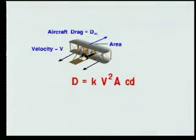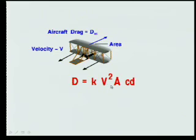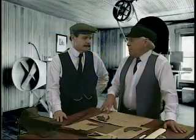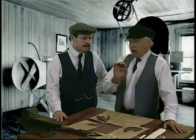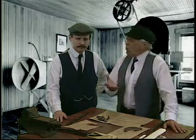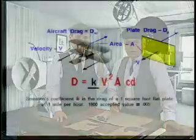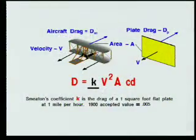The information included this equation, which shows that the drag, D, is equal to a pressure factor, K, times the velocity, V, that's squared, times A, the area, times a factor, CD, called the drag coefficient. Orv, I think maybe it would be useful to students if we discussed each one of those terms in the equation in a little more detail. The first factor in the equation, K, is called the Smeaton's coefficient.